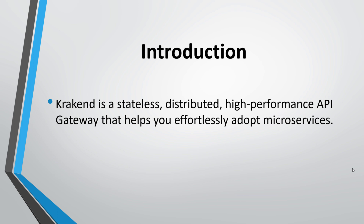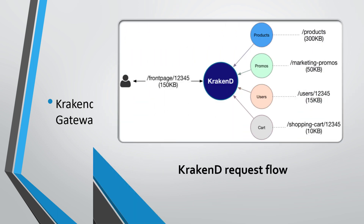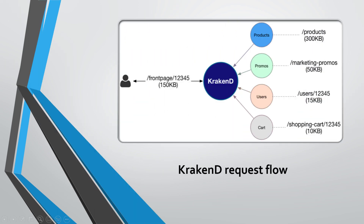We can introduce an API gateway in the middle of the client and backend. In the request flow, the client requests to KrakenD, KrakenD requests to the different services, those services respond to KrakenD, and then KrakenD responds to the client.